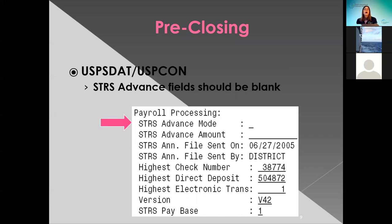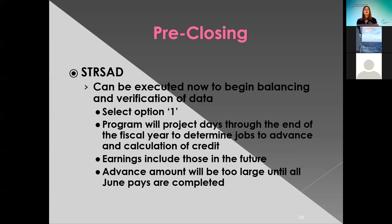For the USPCON screen, you want to make sure for your districts, before they get started, that this screen is zero. They want to make sure their advance mode is cleared out so they have no amount left. If they do, they need to find out what that's coming from. Once they have those all cleared, they can go ahead and start running their STRS advance. They can execute this to start beginning balancing and verification of data. They want to select option one, which will give them projected days through the end of the fiscal year to determine the jobs to advance and their calculation of credit for the employee. The earnings include those that are in the future that have not been paid yet. The advance amount will be too large on the USPCON screen until the June pays are completed.